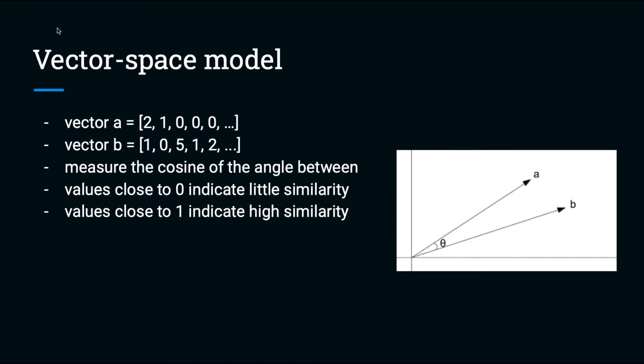For example, imagine we have a vector A with these values and a vector B with these values. This means that the first vocabulary word occurred two times in vector A and one time in vector B. The second vocabulary word occurred once in vector A and not at all in vector B.